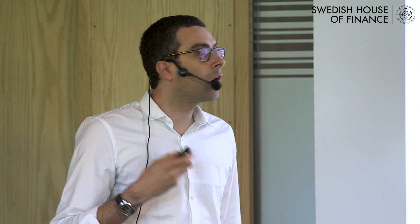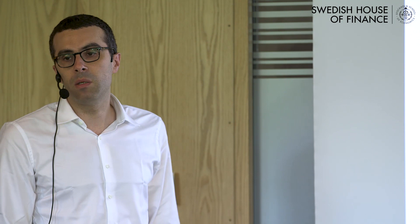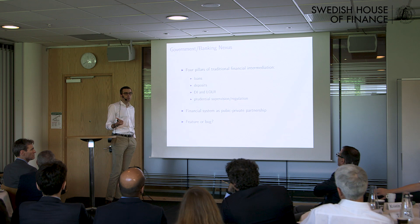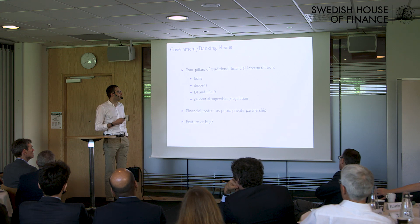The government is deeply embedded in the process of financial intermediation. The government-banking nexus is traditionally organized around four pillars: loans and securities, deposits, deposit insurance and lender of last resort, and prudential supervision and regulation.